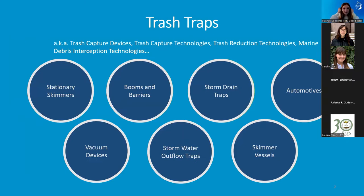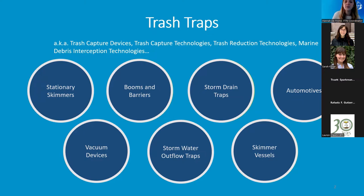So trash traps — we call them trash traps, but they go by many other names as well. They can often be called trash capture devices, capture technologies, trash reduction technologies and so on. But they all work to do a very similar job, and that is to collect anthropogenic waste from our environments. Through the network, we noticed a need for one hub of information on all the devices that are out there. So we've developed a document resource called the device directory, included in your resource package that we should have sent to you before the workshop. In this document, we've split the different devices into seven or eight broad categories, which I'll go through today.